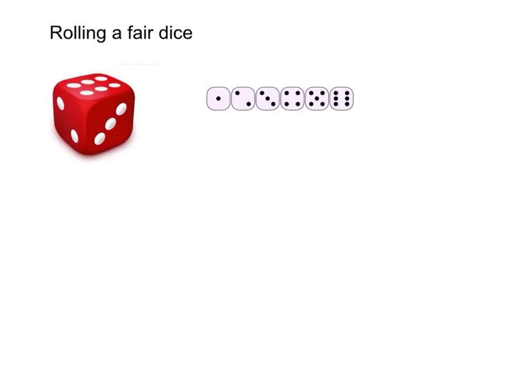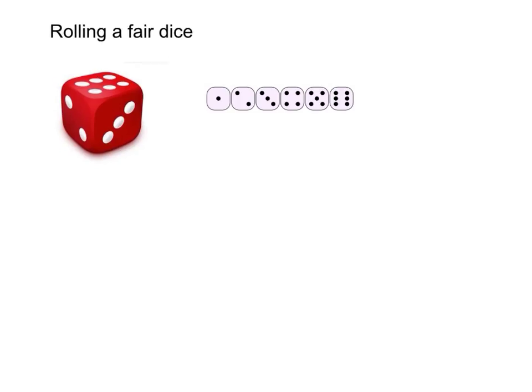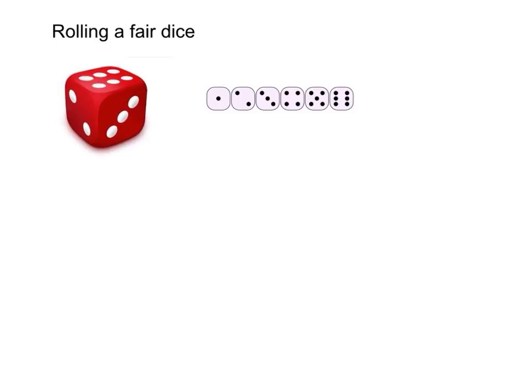So now we can take a very simple example on rolling a fair dice. So this is a dice. And a fair dice actually means the chance of getting any one number from the dice is equal. That means fair. And therefore suppose we are going to find the probability of getting the number three by rolling a fair dice.